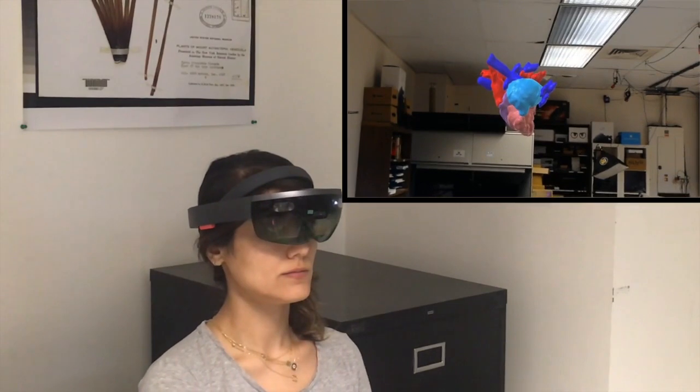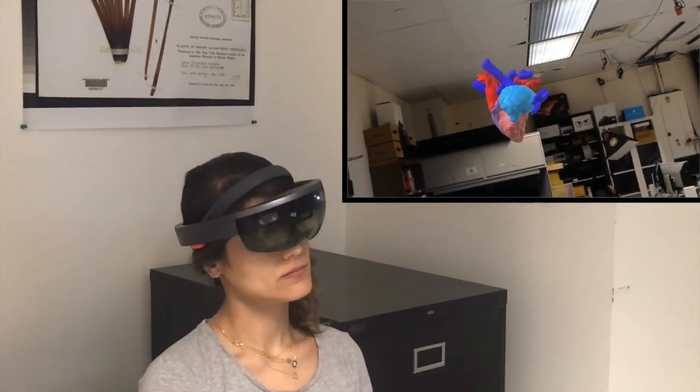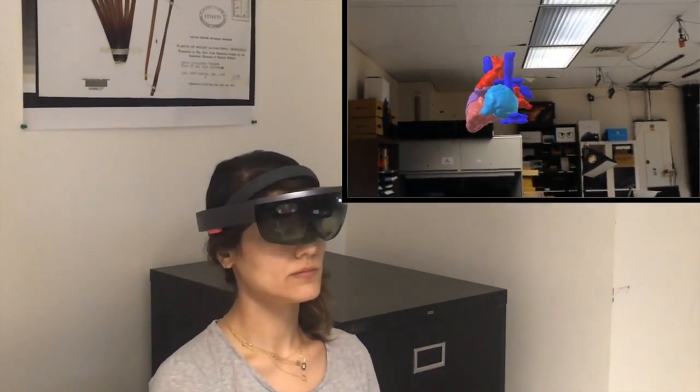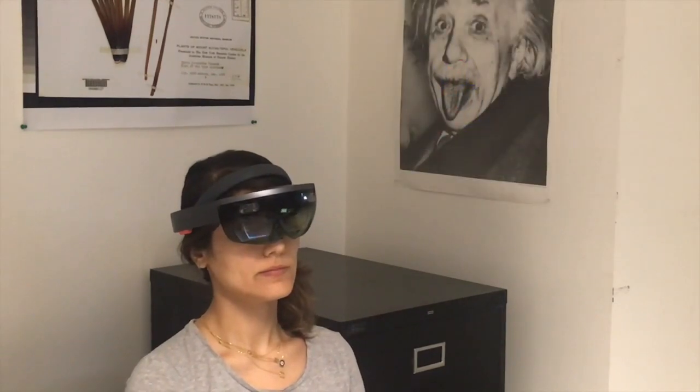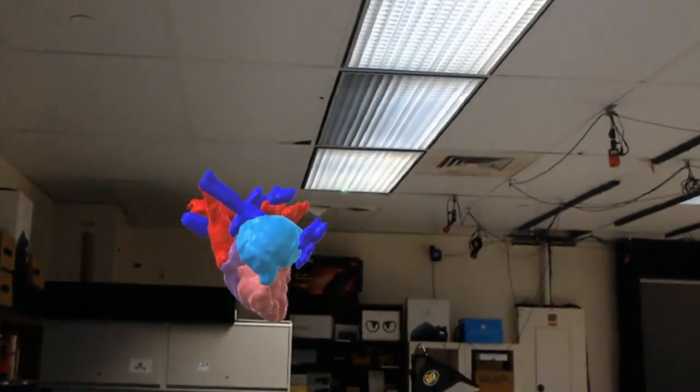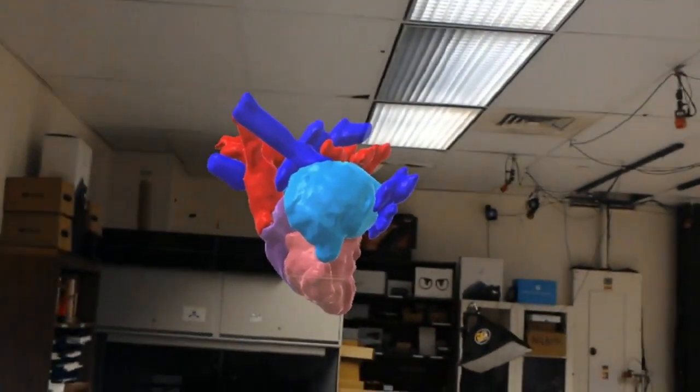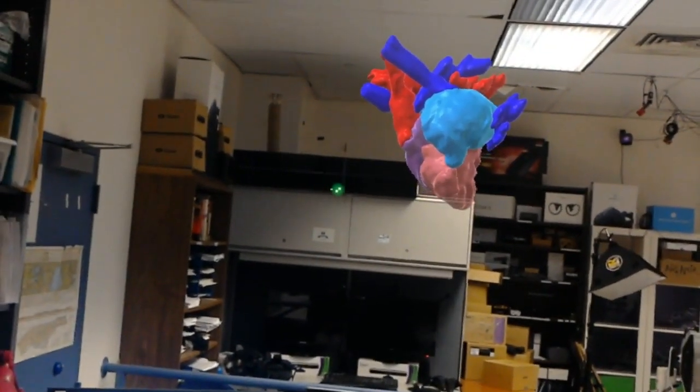Once the transformation has started, if the user keeps their head fixed, the transformation will continue at that rate. Rotating back towards the center of the model will pause the transformation, whereas saying stop will exit out of the transformation mode entirely.